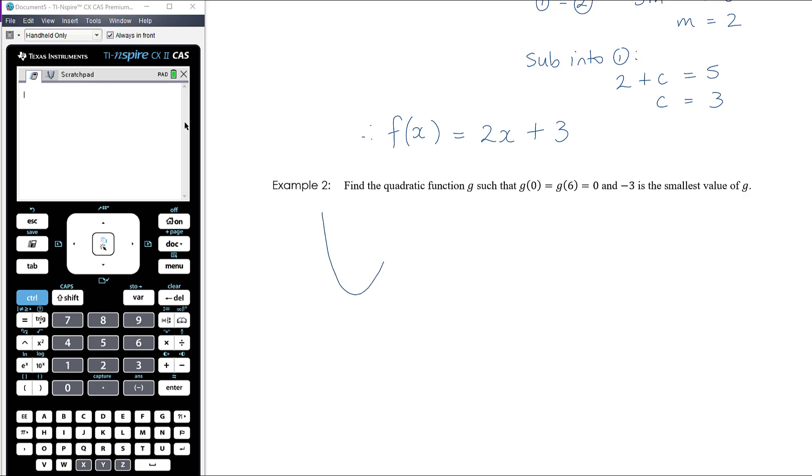We know there's a few different general forms we can use for a quadratic: turning point form or factorized form or just general form ax² plus bx plus c. We want to think a bit about the information we've got to make a decision about which form is going to be most helpful here. We've got a quadratic function; -3 is the smallest value, so that's the y-value of the turning point.